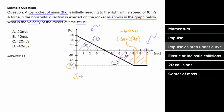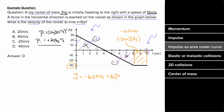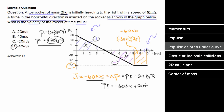An impulse of negative 60 Newton seconds equals the change in momentum of the object. The initial momentum is 2 kilograms times 10 meters per second, which is positive 20 kilogram meters per second. Since the change in momentum is negative 60, the final momentum is negative 60 plus 20, which equals negative 40 kilogram meters per second.